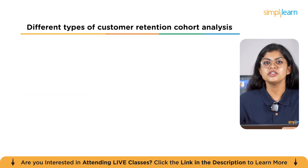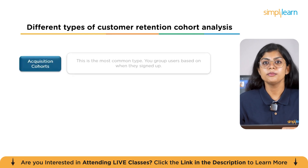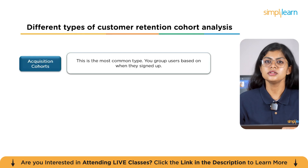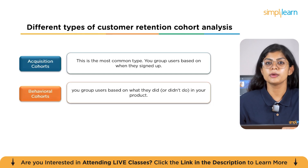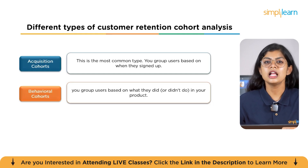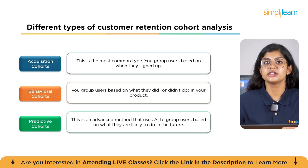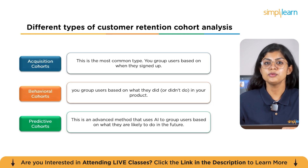There are three main types of cohort analysis. First, acquisition cohorts — the 'when' question. This is the most common type: you group users based on when they signed up, for example all users from January. This is perfect for seeing whether marketing campaigns are attracting loyal customers over time. Second, behavior cohorts — the 'what' question. You group users based on what they did or didn't do, for example comparing users who completed a tutorial versus those who skipped it, to understand why certain users are more engaged. Third, predictive cohorts — the 'what's next' question. This advanced method uses AI to group users based on what they're likely to do in the future, like churn or upgrade, enabling your team to proactively engage at-risk users before they leave.